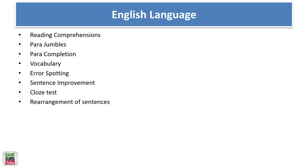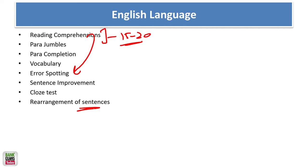In English language, if your reading speed is good and you can comprehend what you read — for example, if you read newspapers daily — this section is very easy. You can score 15-20 marks directly from reading comprehensions with minimal preparation. Error spotting and cloze test would also be easy, and sentence rearrangement would be easy too. Just practice some tests and if your English is already good, this section is straightforward.